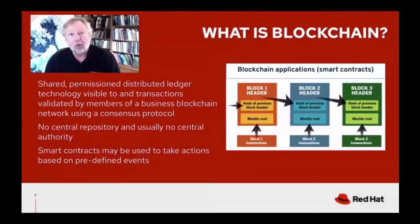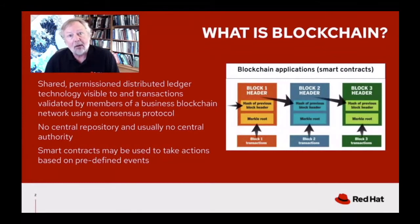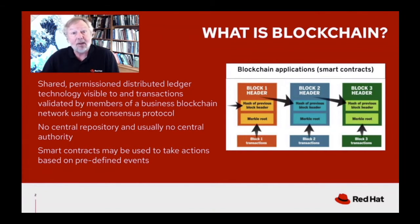For example, a company might use a blockchain in conjunction with its suppliers. In that case it's still a distributed ledger, but you essentially have one central authority deciding who can participate and what the rules around that blockchain are. An additional element is smart contracts, seen on the top layer of the diagram, which can take actions based on predefined events. For instance, if a transaction completes — if you receive a shipped good or send money — actions can be automatically triggered, such as a payment being taken in response to a good being delivered.